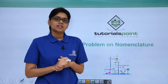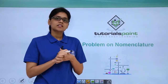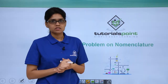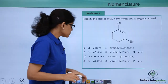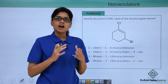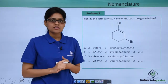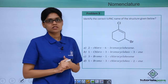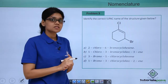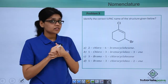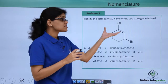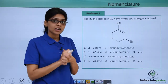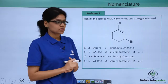Hello everyone, let us discuss another important problem on nomenclature based on cyclic structures. The question asked here is to identify the correct IUPAC name of the given structure. We can see that this is not a straight chain compound but a cyclic compound, so let us try to figure out how to write the IUPAC name of this particular structure.